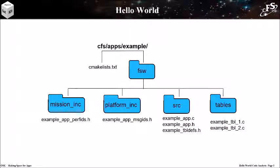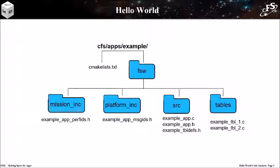Mission include contains files that define mission-scope parameters. Platform include contains files that define platform-scope parameters. Source contains the app source code, except for the default table definition files that are in the tables directory. Note that this example app is structured to help teach how to use the cFE services, so the code structure may not be optimal for a large or more complex app. Most of the definitions and code are contained in example_app.h and example_app.c.